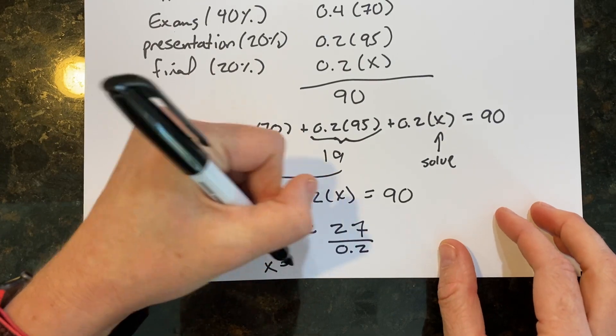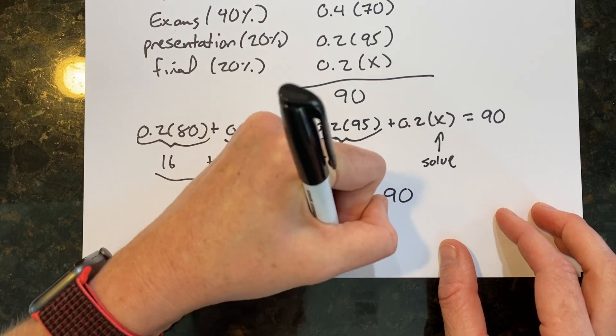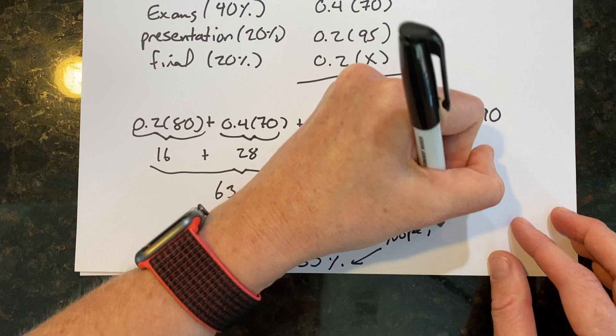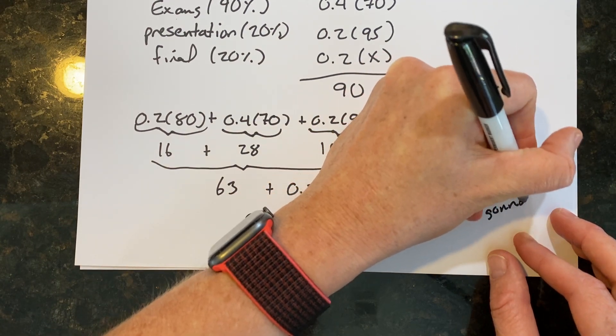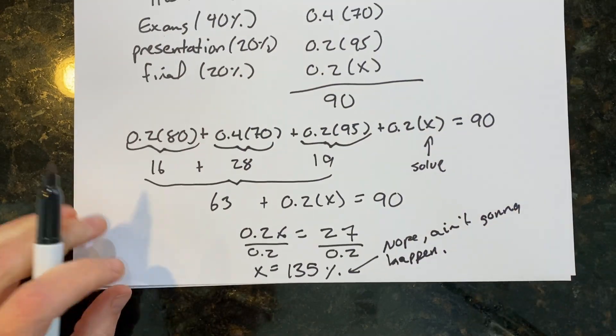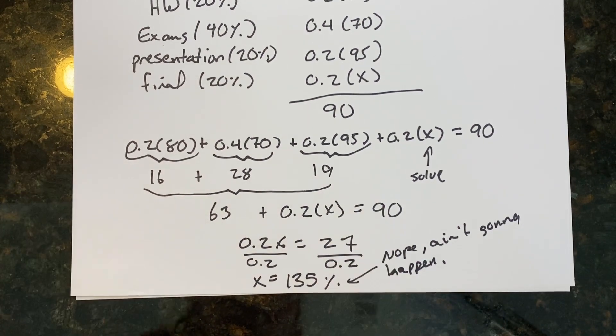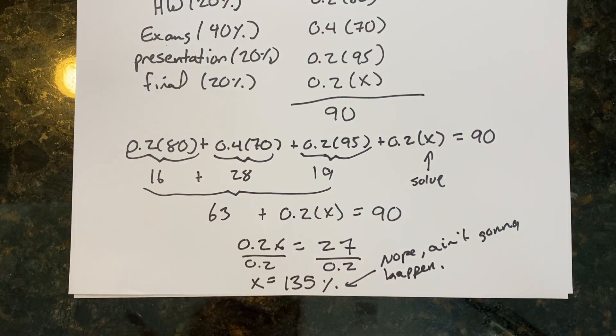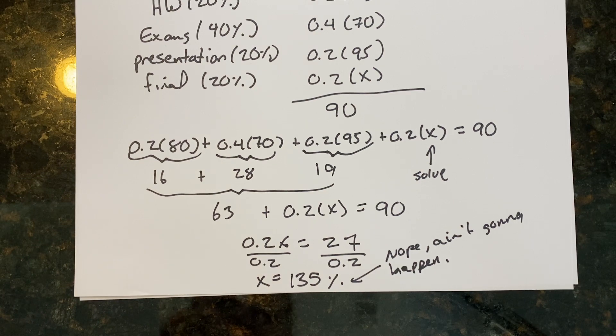And I found out that X is going to be equal to 135 percent. Nope, it ain't gonna happen, and an A is out of reach. Maybe I should have done this first, but you know, at the same time, this is a realistic example. So then you might want to readjust your expectations, set this equation equal to 80 and solve for X again and see what it would take to get a B.